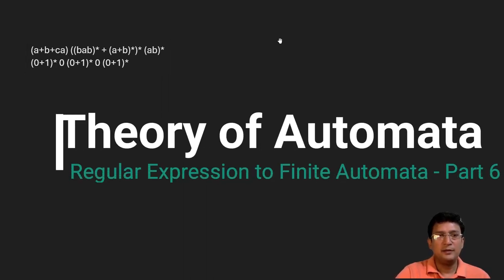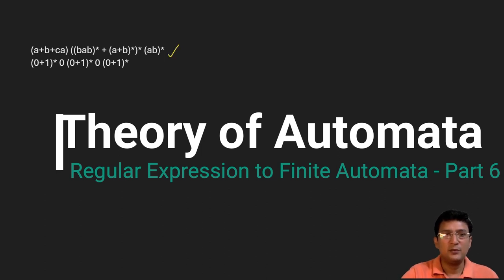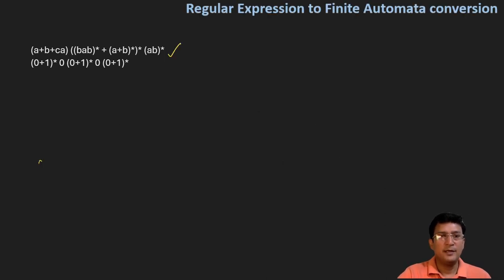Now let us take some more examples for the conversion of regular expressions to finite automata. Let's pick this one. This is a very interesting expression where we need to decide which identities to apply: (a+b+c)(bab)* + (a+b)*(ab)*.